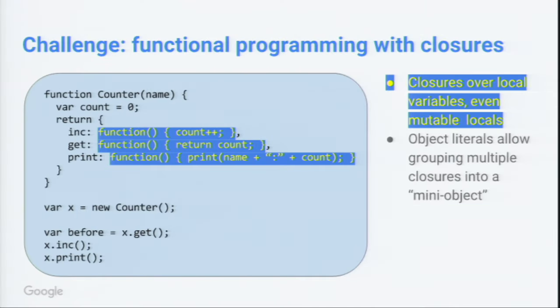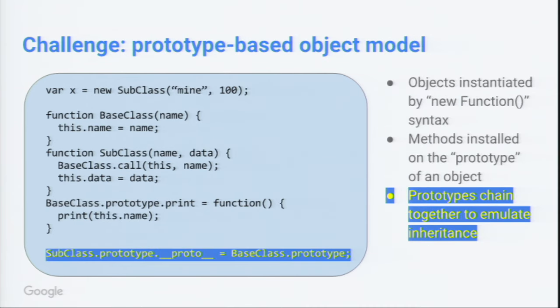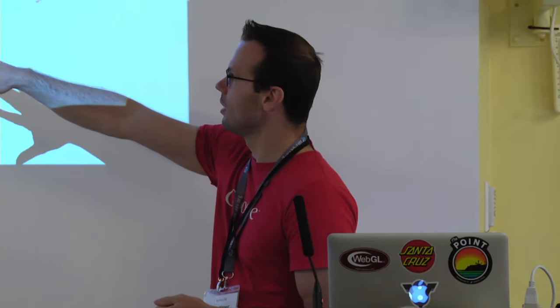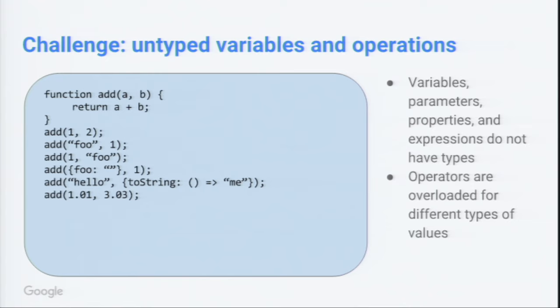When programs are always presented in source form, new language features show up in source code, which means the VM has to support every feature. There's no way to take a source feature and just generate the same old bytecode — the VM has to be upgraded. Thankfully, most JavaScript VMs come in browsers with a release schedule, so you're automatically getting a new version of JavaScript roughly every six weeks.